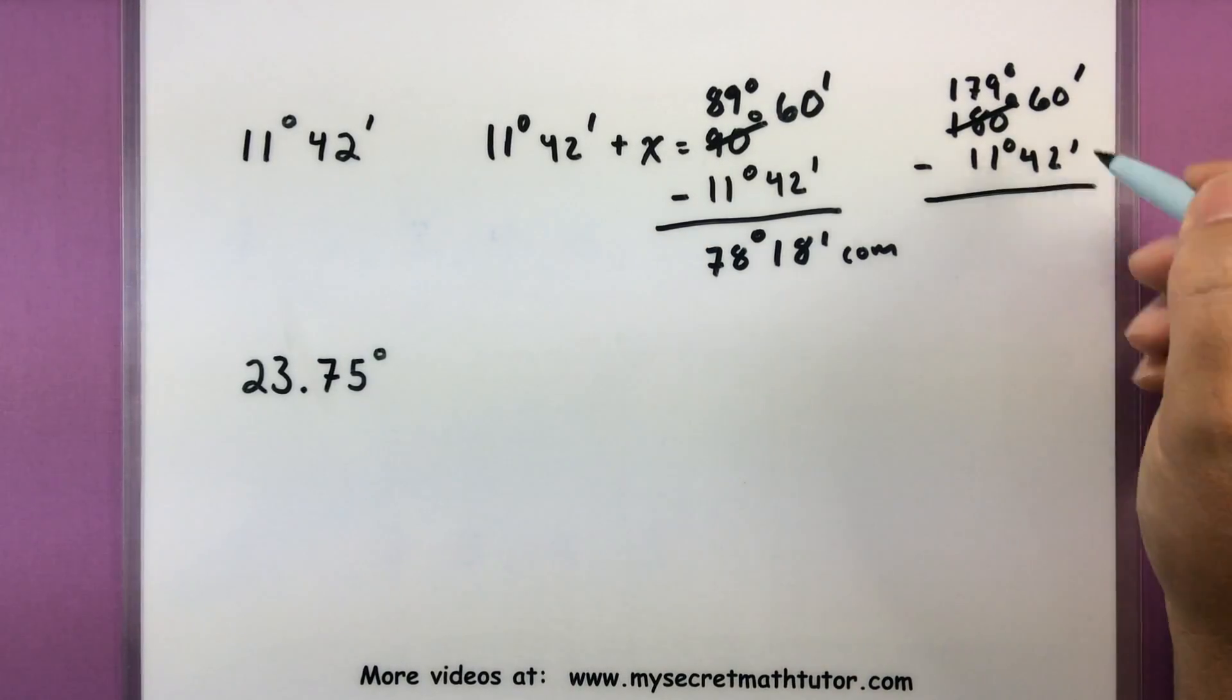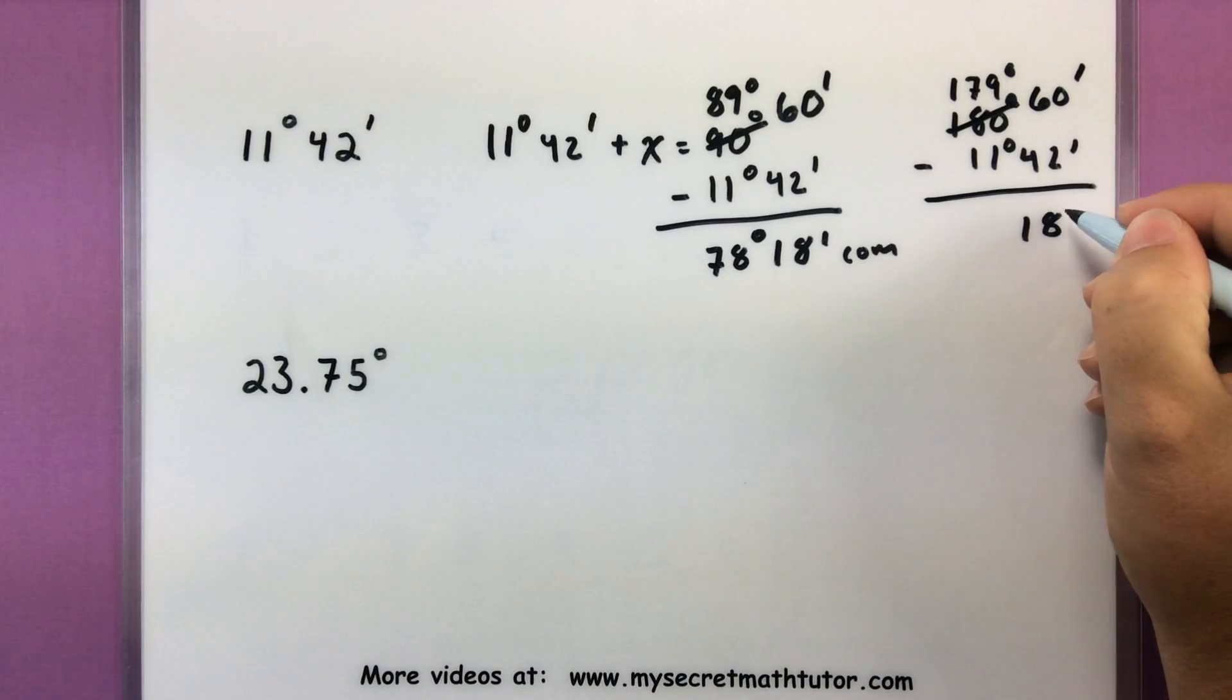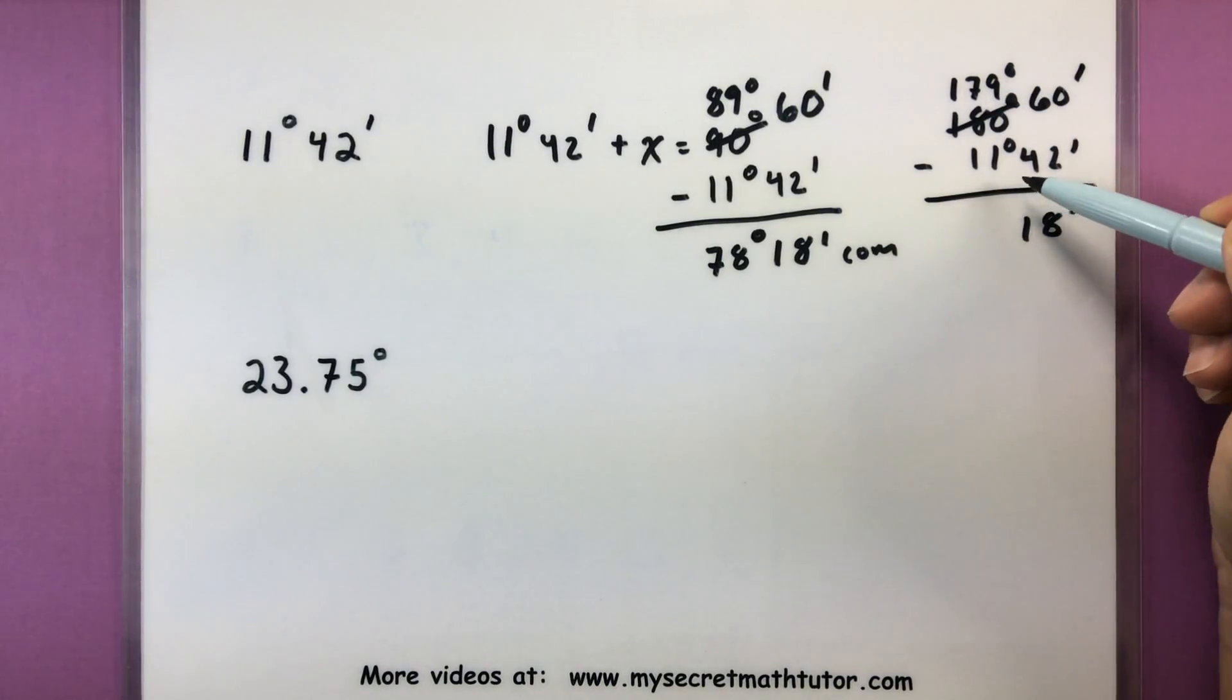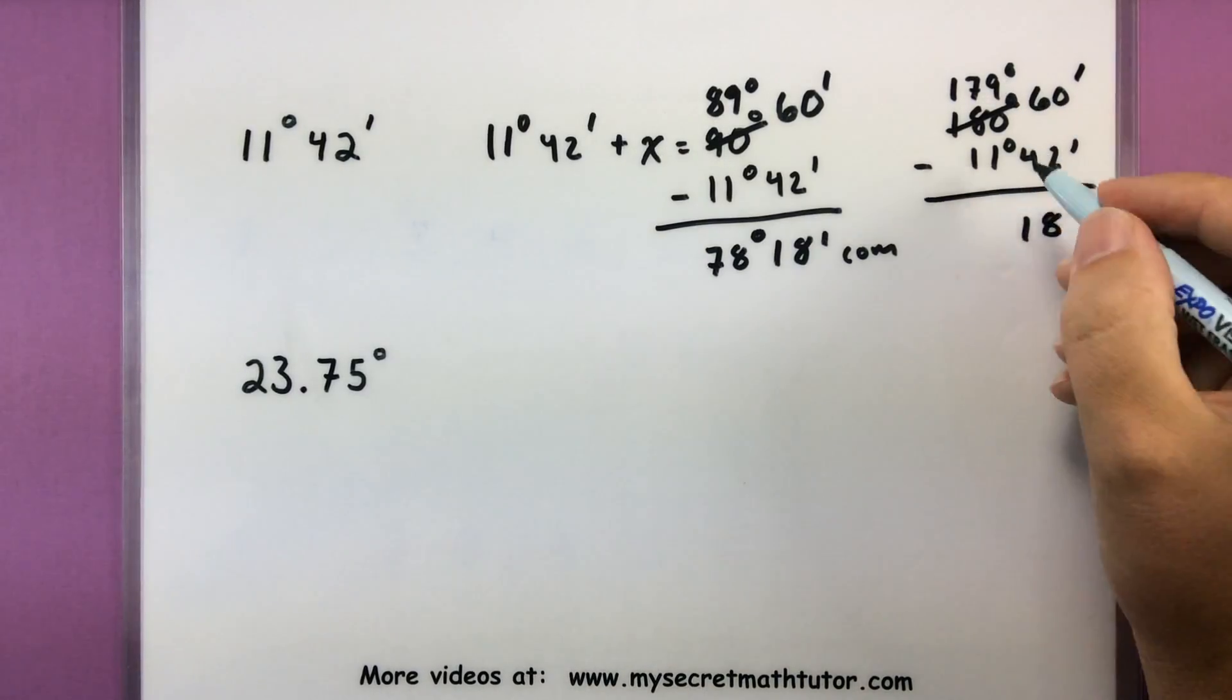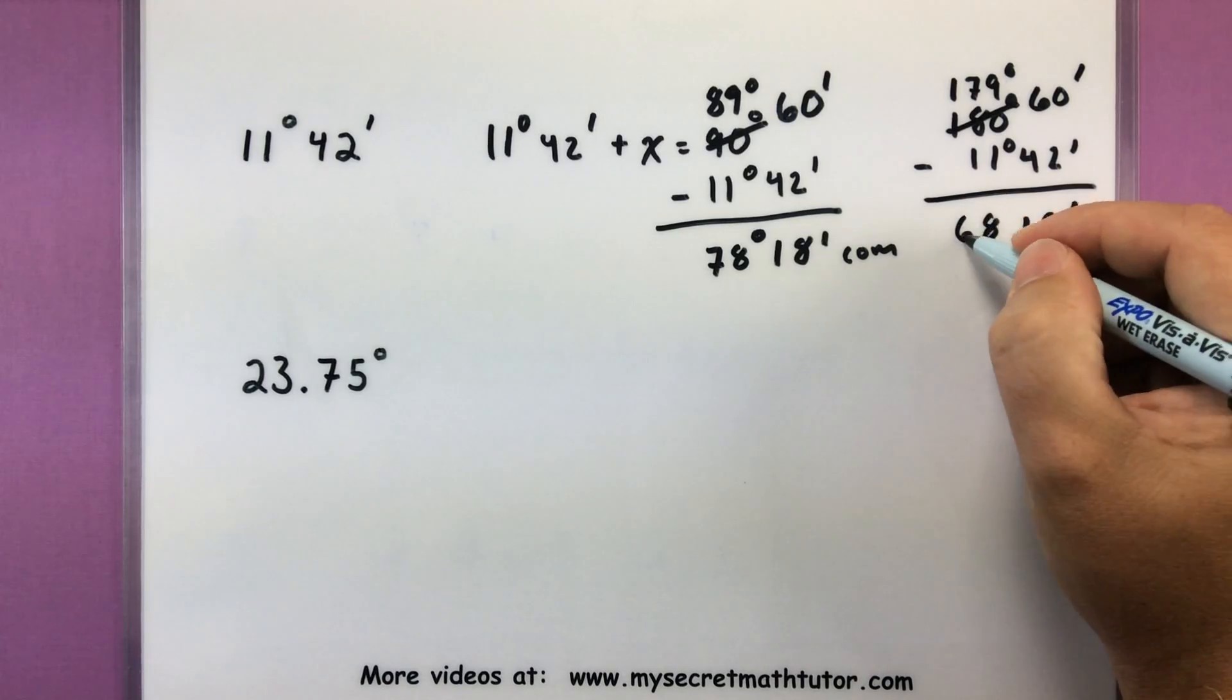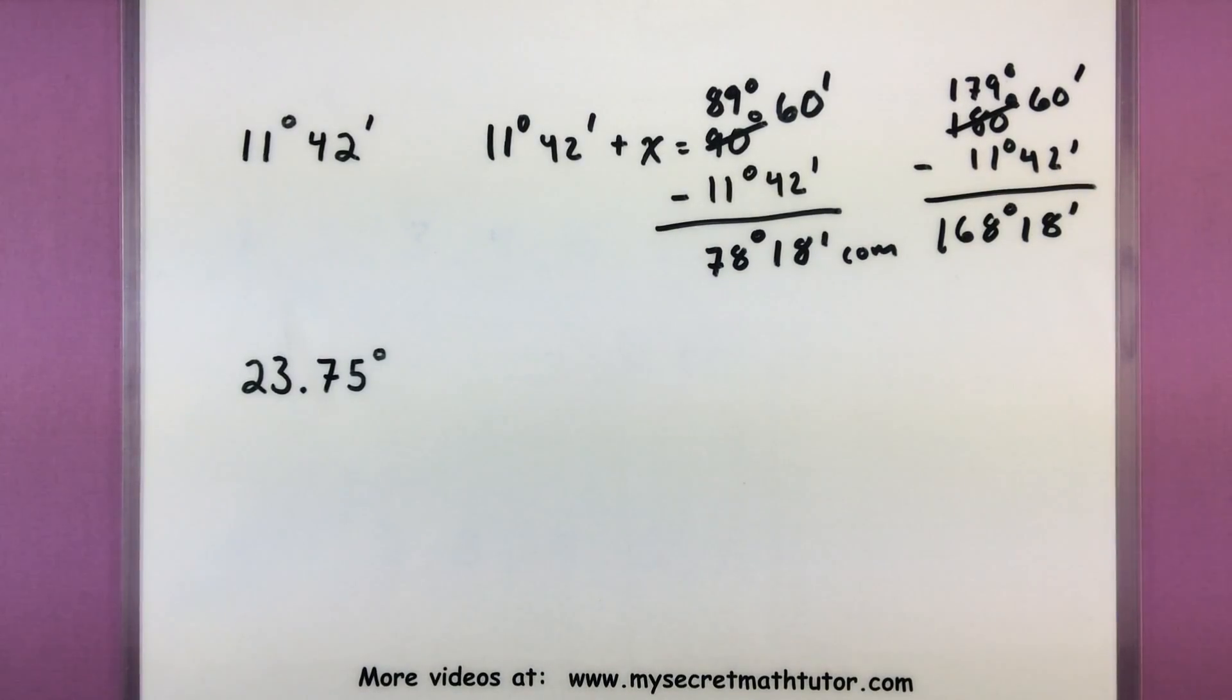And now we'll subtract this away. So that will again give us 18 minutes. And now I have 179 degrees minus 11 degrees. So 9 minus 1, there's an 8. 7 minus 1 is a 6, and then we have just a 1. So 168 degrees, 18 minutes.